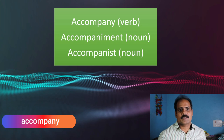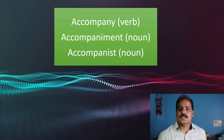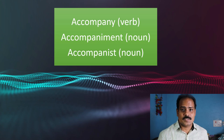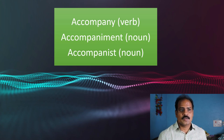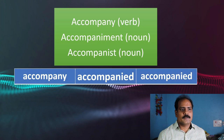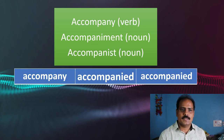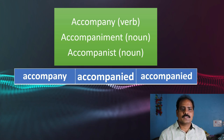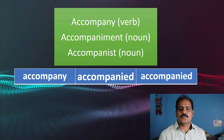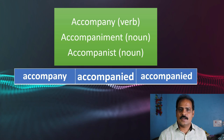Accompany can be used as a verb. It can also be a noun — accompaniment — and another noun form is accompanist. Let's look at the verb forms: accompany, accompanied, accompanied. It's a regular verb. We just add ED; we change Y to I and then add ED.